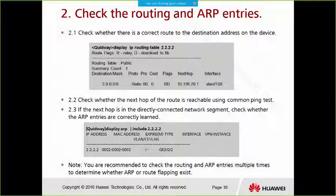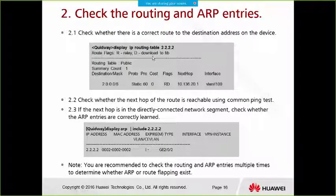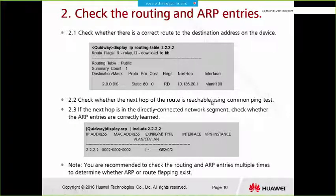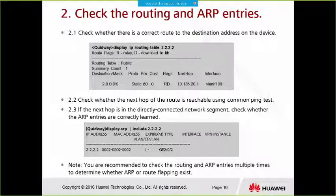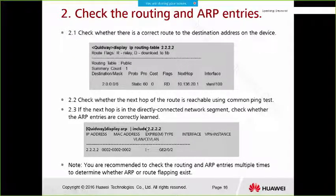Check the routing and ARP entries to verify there is a correct route to the destination on the device. Use 'display ip routing-table' with the destination IP address. Then check whether the next hop of the route is reachable using a ping test. If the next hop is in a directly connected network segment, check whether the ARP entries are correctly learned using 'display ARP' with the IP address — there should be a valid ARP and MAC address entry.